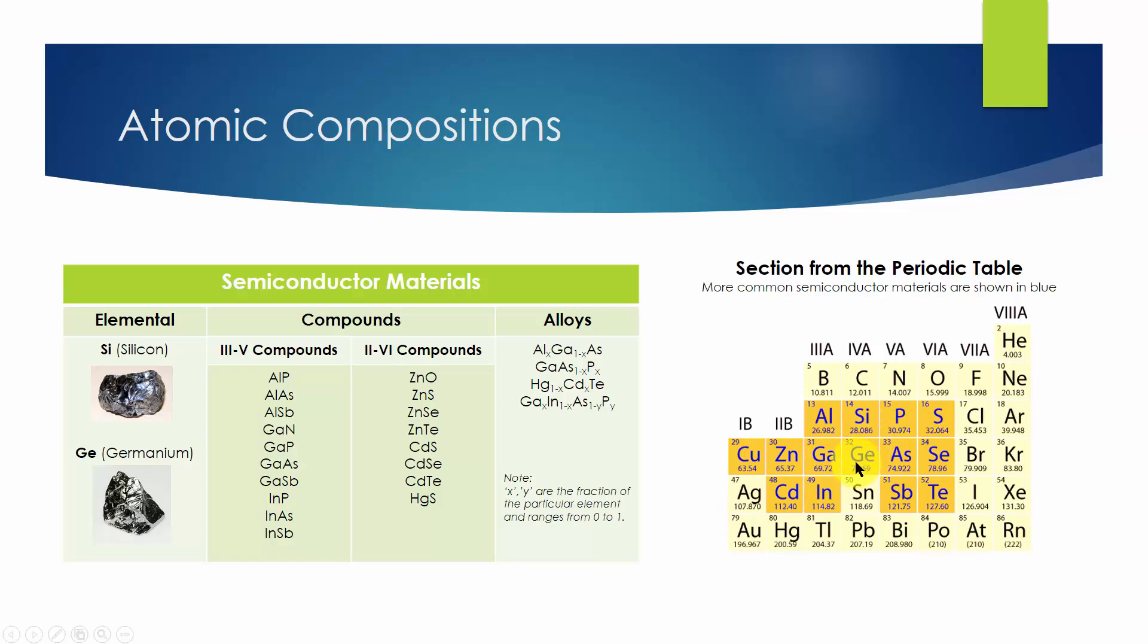The column 2 element cadmium plus the column 6 element tellurium yields the 2-6 compound semiconductor cadmium telluride. The fractional combination of column 3 elements aluminum and gallium plus the column 5 element arsenic yields the alloy semiconductor aluminum gallium arsenide.